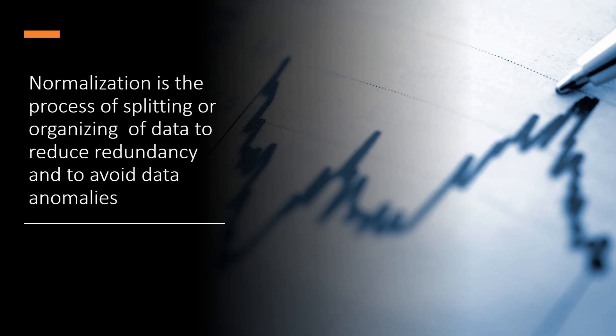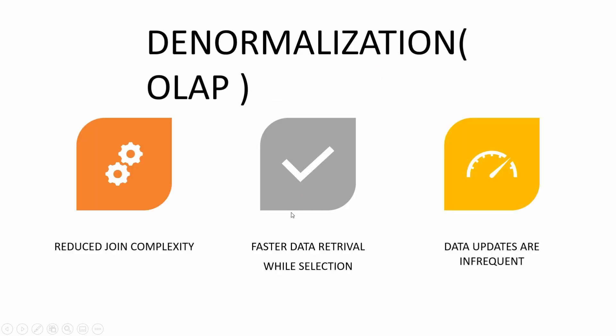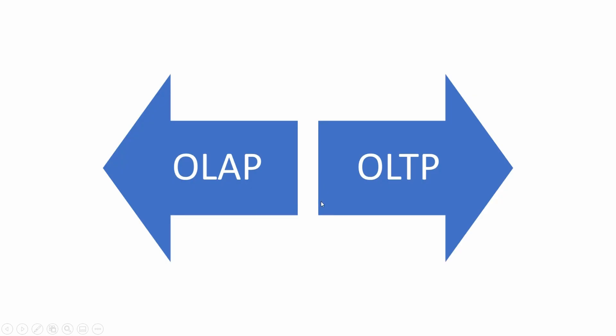Before we wrap up, let's do a quick recap. Normalization is a process of splitting or organizing data to remove redundancy and to avoid data anomalies. Remember, OLTP systems are highly normalized while OLAP systems are usually denormalized. In the next video we are going to talk about normal forms. I will make separate videos on denormalization and the differences between OLTP and OLAP systems. Once you are done with this series, all parts of normalization and normal forms will be crystal clear to you.